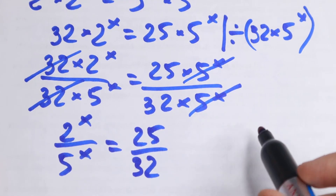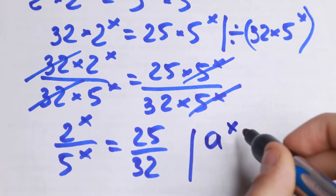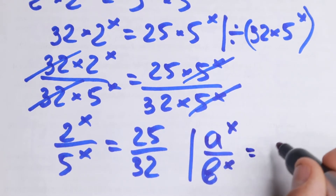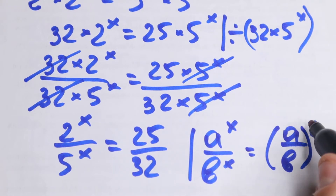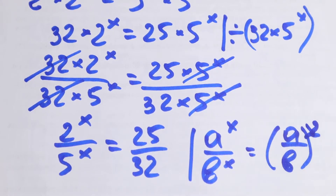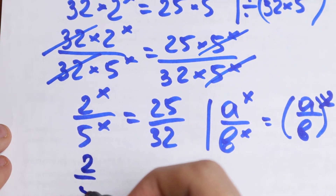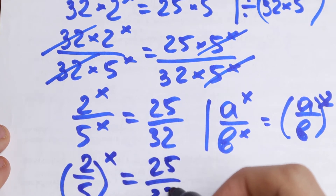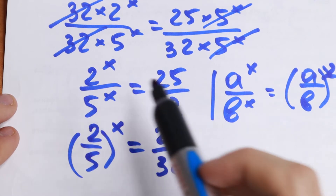Now we need another rule. If we have a to the power x divided by b to the power x — different bases but the same exponent x — we can combine them into one parenthesis: a divided by b, raised to the power x. Applying this rule here, we get 2 over 5, raised to the power x, equal to 25 over 32.